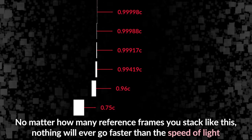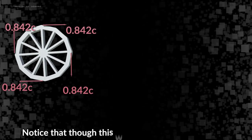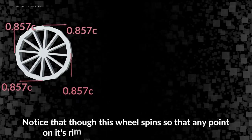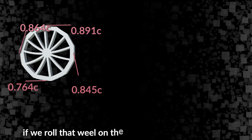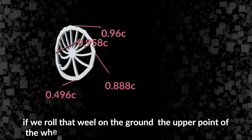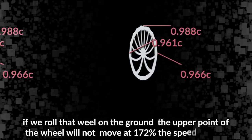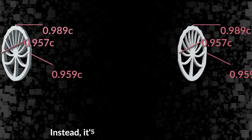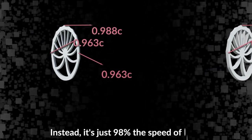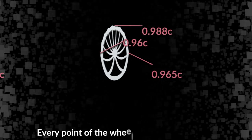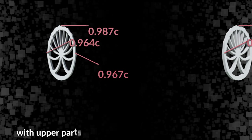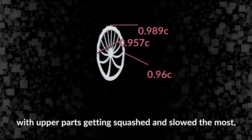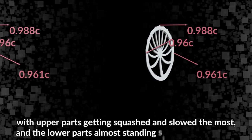Notice that though this wheel spins so that any point on its rim moves at 86% the speed of light, if we roll that wheel on the ground, the upper point of the wheel will not move at 172% the speed of light - instead it's just 98% the speed of light. Every point of the wheel has its own velocity, therefore it all gets distorted non-uniformly, with upper parts getting squashed and slowed the most and the lower parts almost standing still and undistorted.